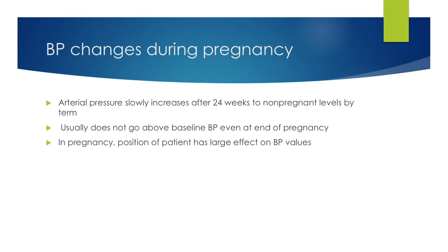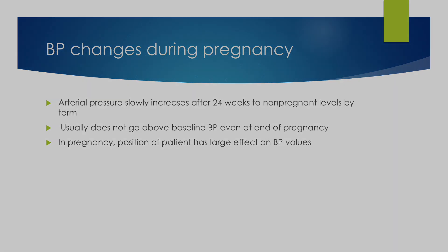Arterial blood pressure slowly increases after 24 weeks to non-pregnant levels by term. Usually, this does not go above the baseline blood pressure, even at the end of pregnancy. In pregnancy, the position of the patient has a large effect on blood pressure values.